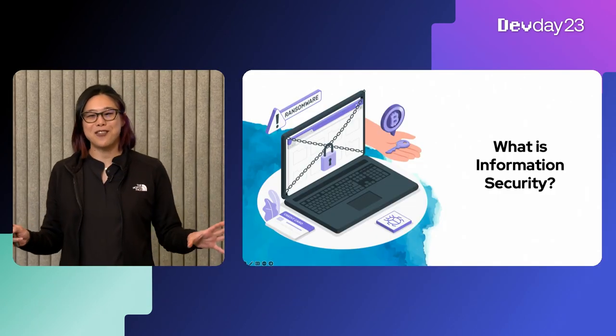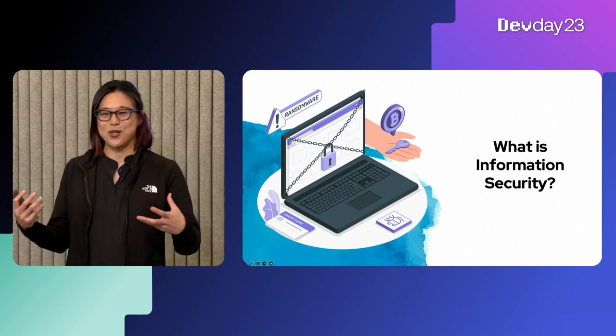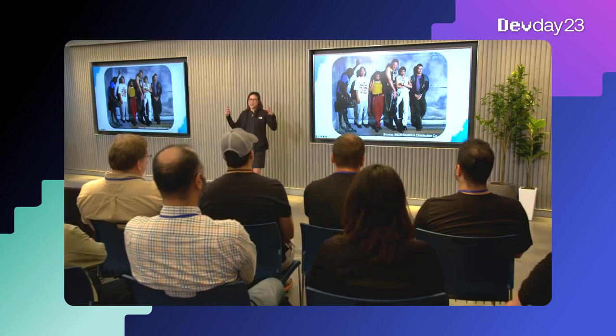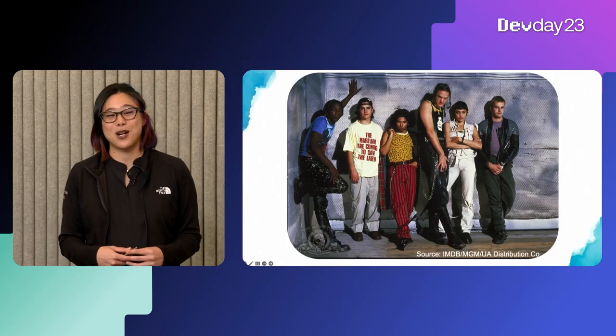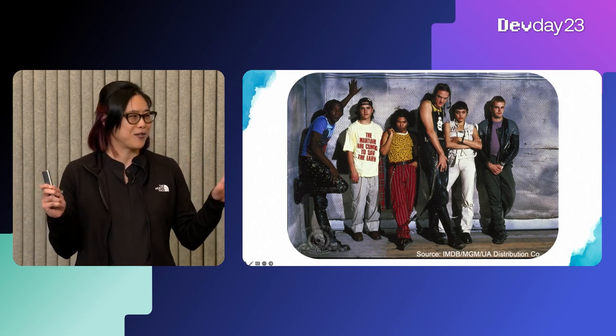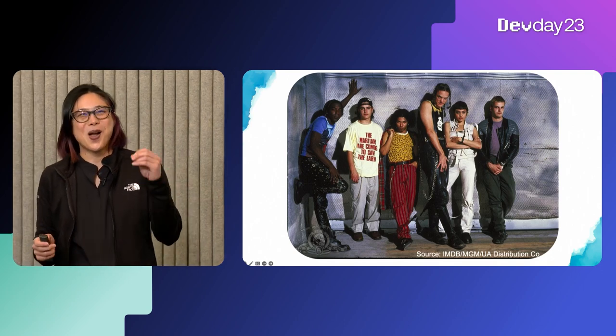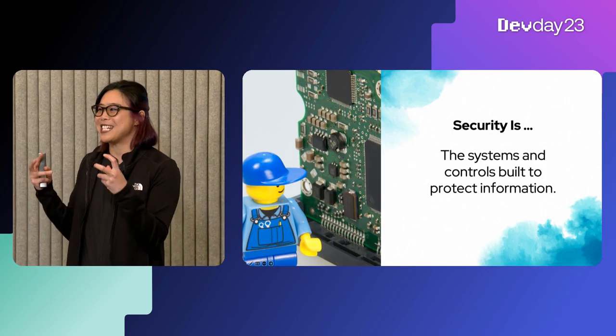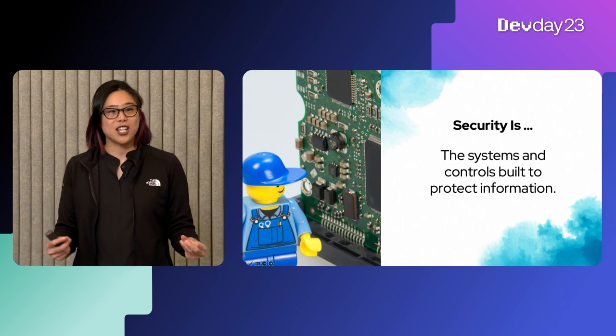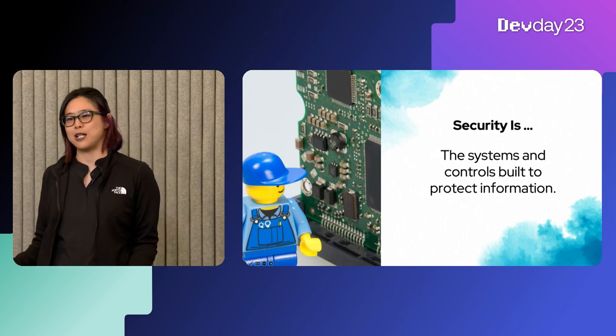Hand in hand with privacy comes security. With security, we get even more buzzwords — things like phishing, threat actors, and hackers. Though the hackers in the movie Hackers ended up being the heroes of our story — and it's part of your homework to watch it because every pop culture reference in security is from that movie. Security at its core is the systems and controls built to protect information, including proprietary code, credit card information, and yes, personally identifiable information, also known as PII.